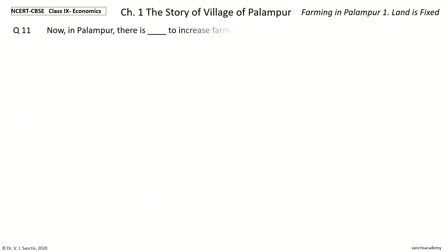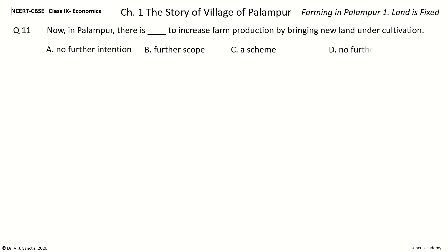Question 11: Now in Palampur, there is Dash to increase Farm Production by bringing New Land under Cultivation. The options are No further intention, Further scope, A scheme, No further scope. Your time to choose. And the answer is No further scope. So, now in Palampur, there is no further scope to increase Farm Production by bringing New Land under Cultivation.